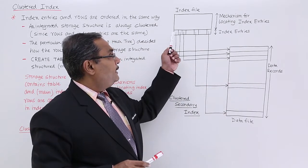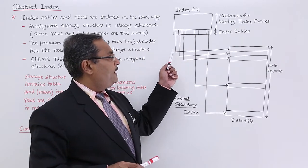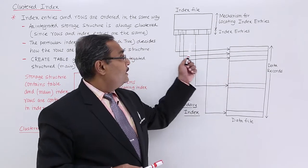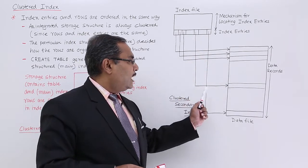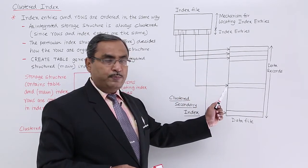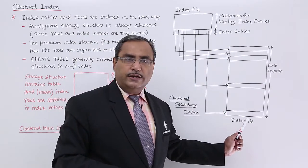The first index entry points to the first row, the second to the second, the third to the third. The ith one points to the ith row, and the last one points to the last data record.